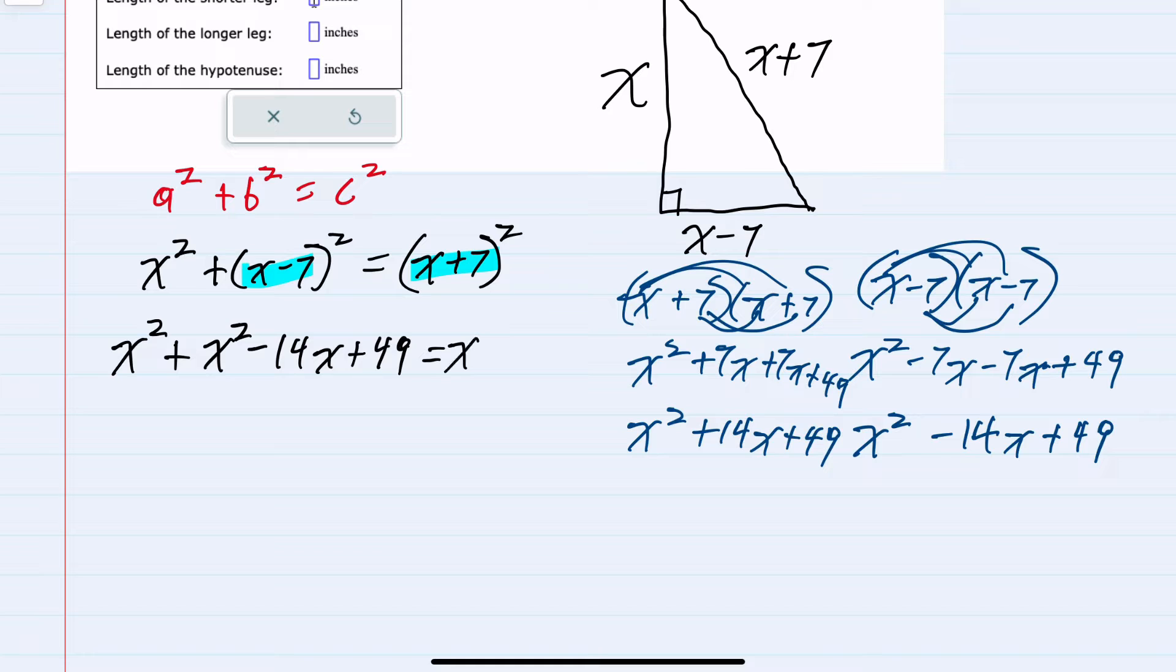So doing that substitution we can simplify. On the left hand side we have 2x squared minus 14x plus 49 and bring down the rest.